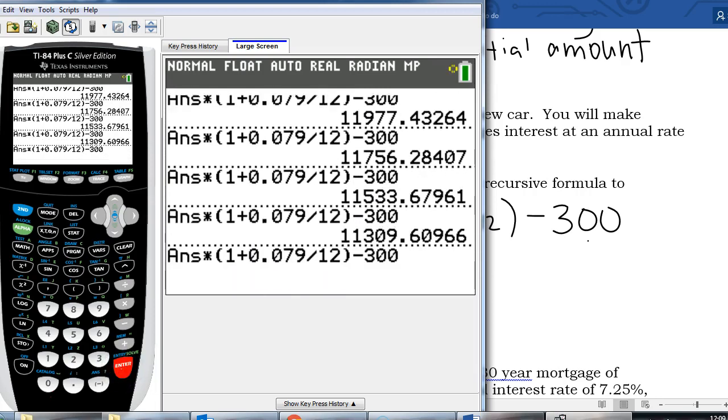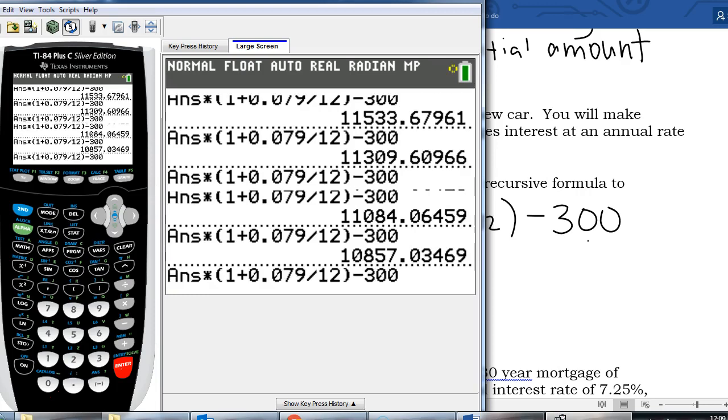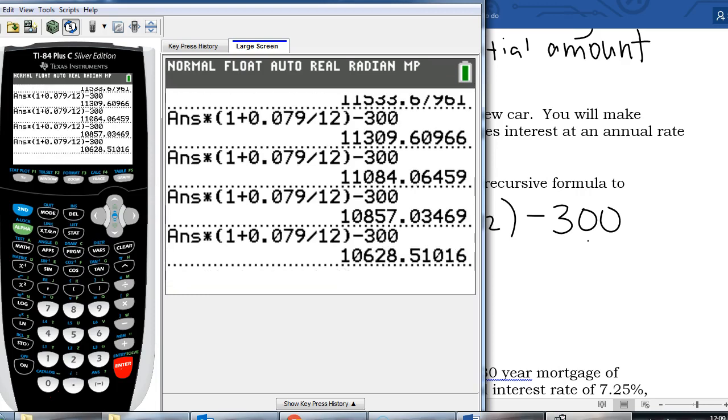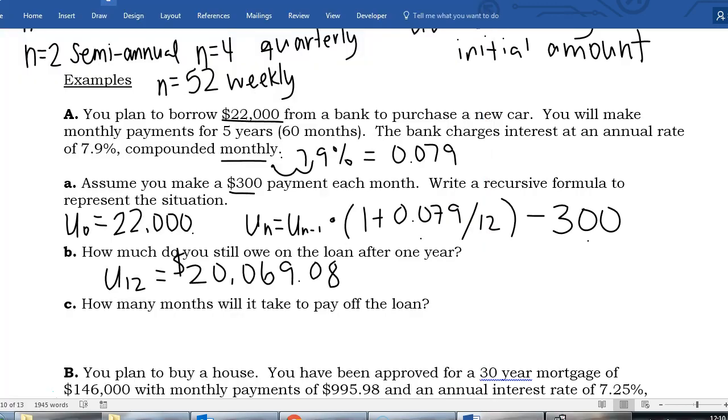So you can see after 60 months or five years I still haven't finished paying off my loan. I'm not going to keep going but I think it's around 108 months that we finally hit a zero dollar balance. So if you have the patience to actually count that out, find the answer, let me know.